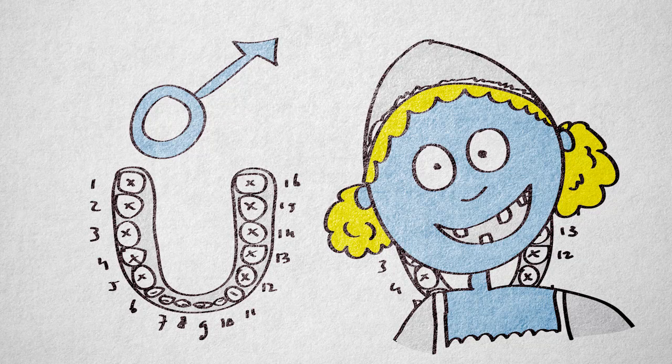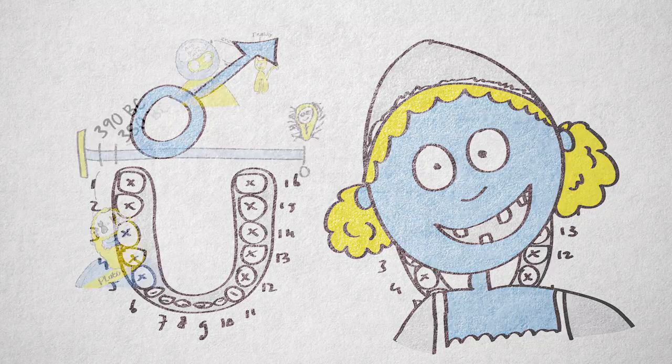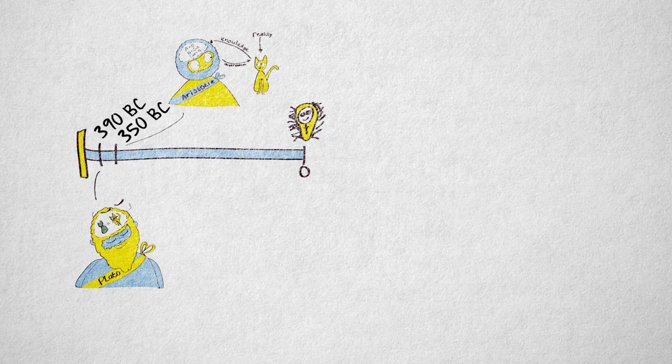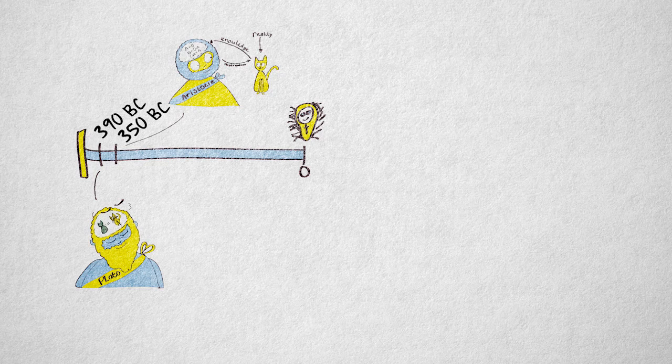Even so, Plato's and Aristotle's views remained dominant for almost 2,000 years. It took until the end of the 16th century for people to realize that Plato and Aristotle's views were flawed.